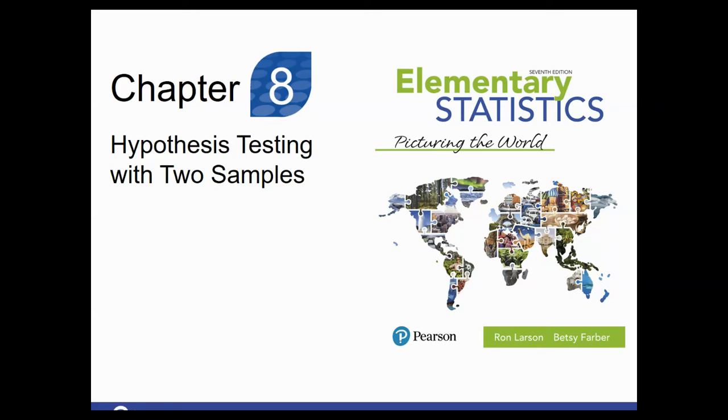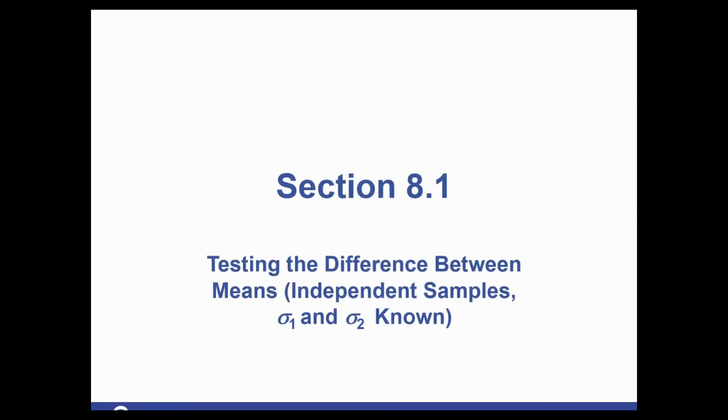Chapter 8 brings us now into two-sample hypothesis tests. So this first section and scenario that we're looking at is when we have independent samples, so two different groups, and we do still have our population standard deviation for both groups.